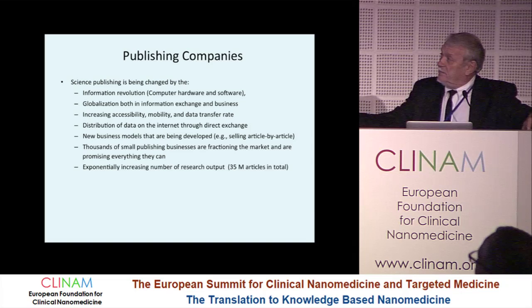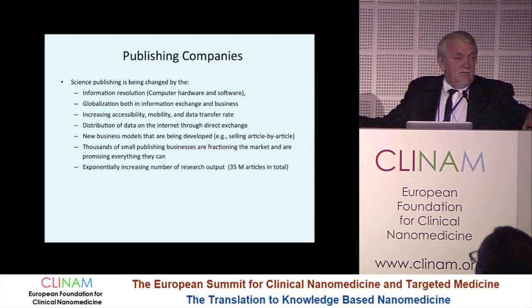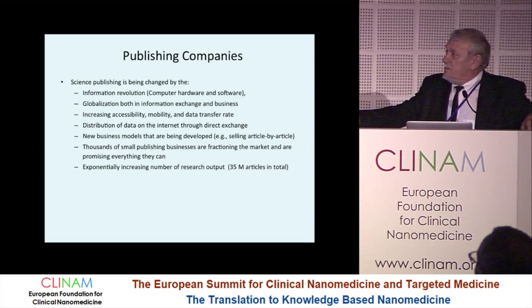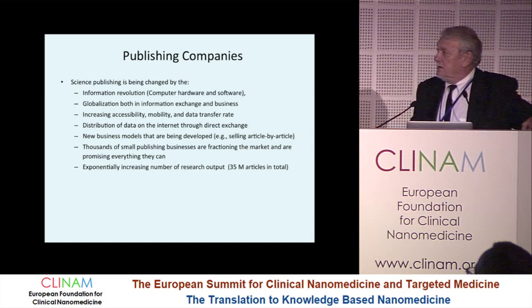Publishing companies are also under tremendous pressure because a lot of things are changing. There is an information revolution, globalization, and increasing accessibility and mobility of data transfer. Distribution of data through the internet and direct exchange is generating new business models. As a result, thousands of small companies have formed publishing businesses — about 1,500 at last count. They are fragmenting the market and promising short review times, immediate decisions, and high self-calculated impact factors.